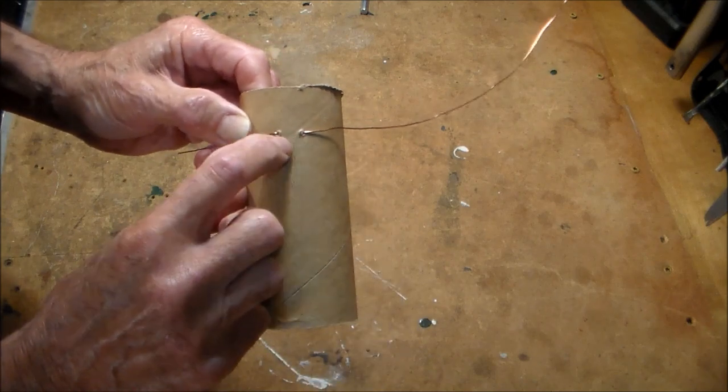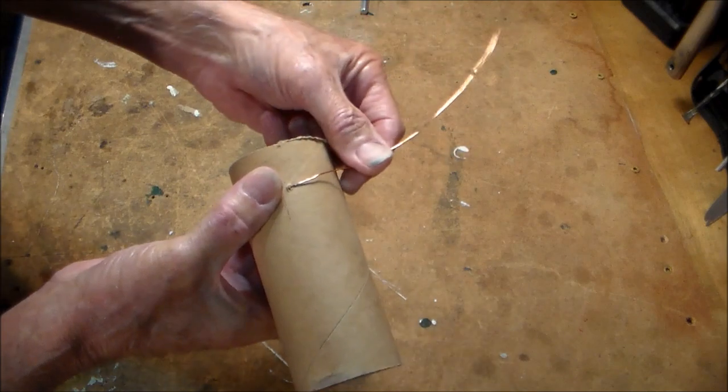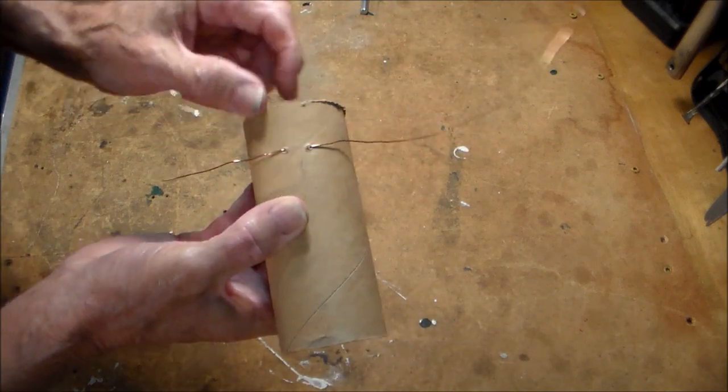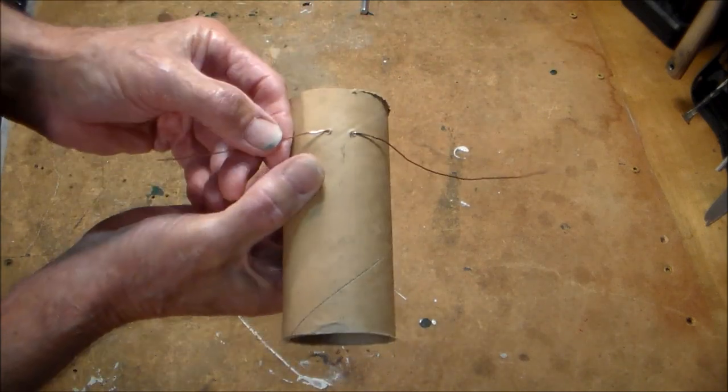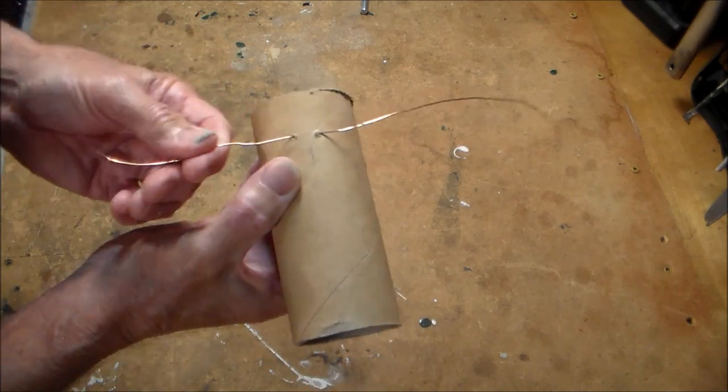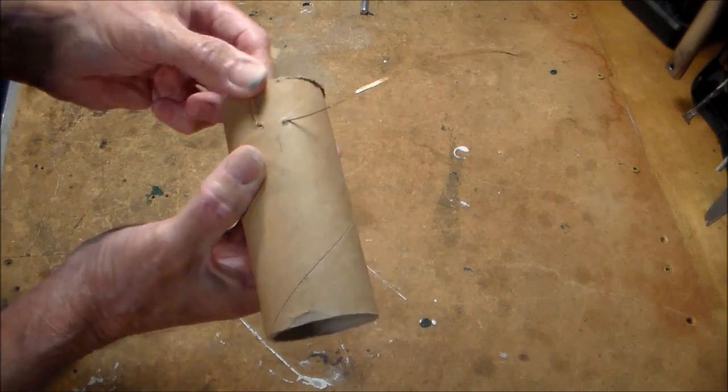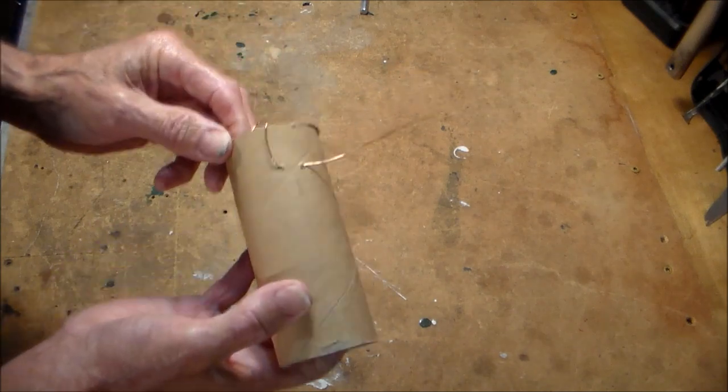Begin by drilling two teeny holes near the end of the coil. Take the wire from your spool and feed it through one hole and out the other hole. Pull it through with about six inches of excess, which will be used later to connect to your circuit. Just tuck the excess inside the tube for now and you're ready to start winding.